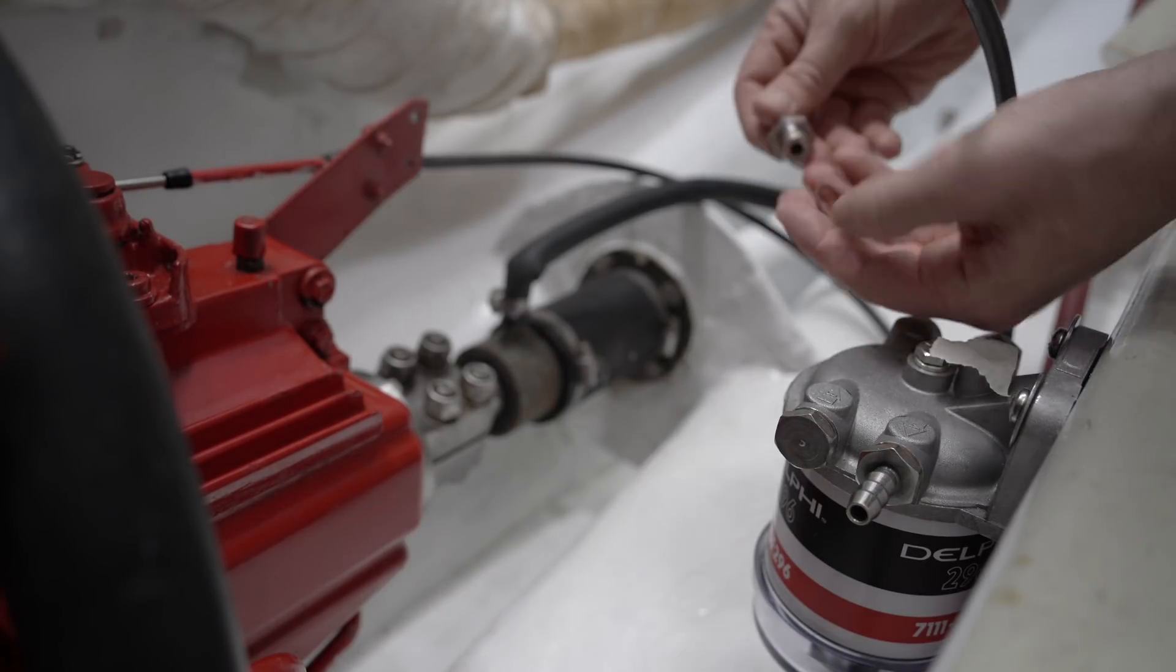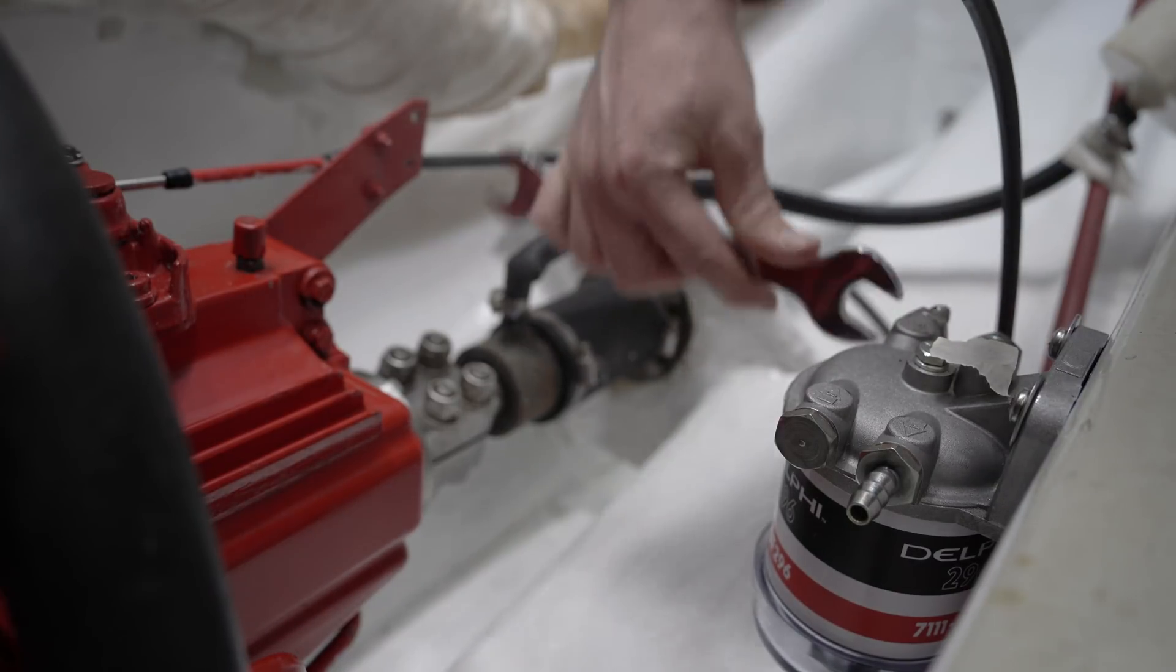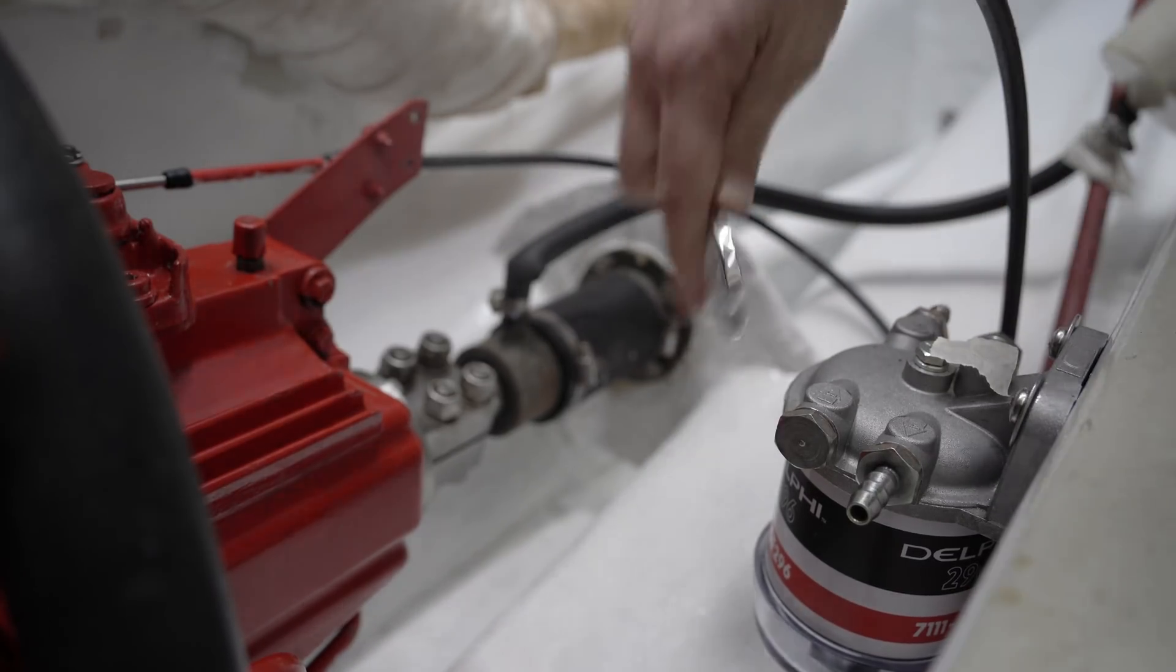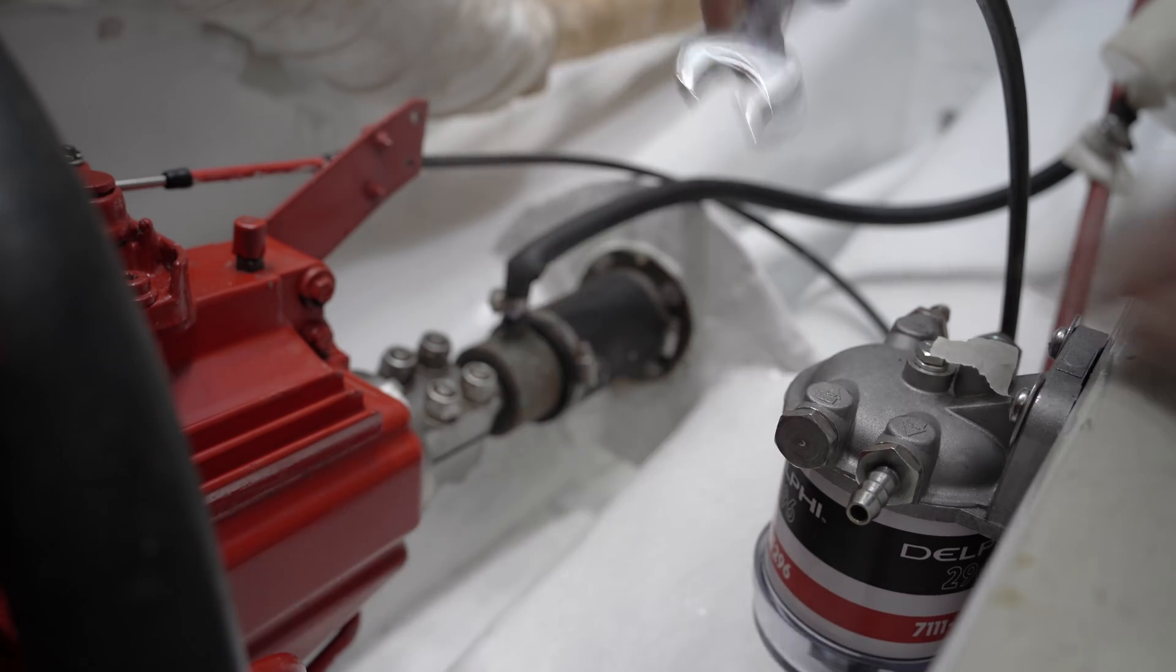I've placed the water separator and fuel filter in the engine bay itself and in a spot I can get at but where it's not going to get knocked or damaged. I've used hose tails again with copper sealing washers as I'm assured they're superior to fabric or rubber ones.